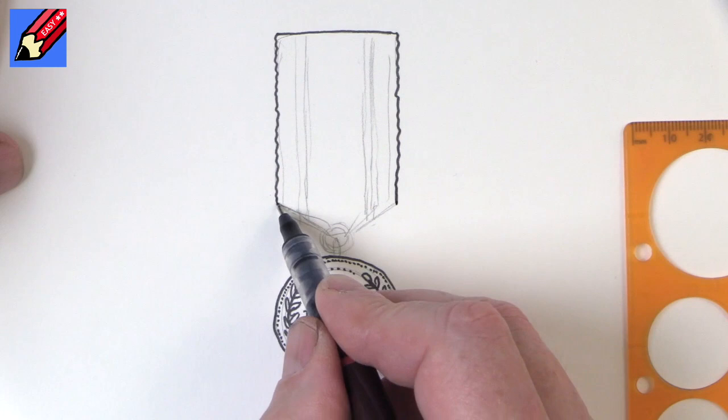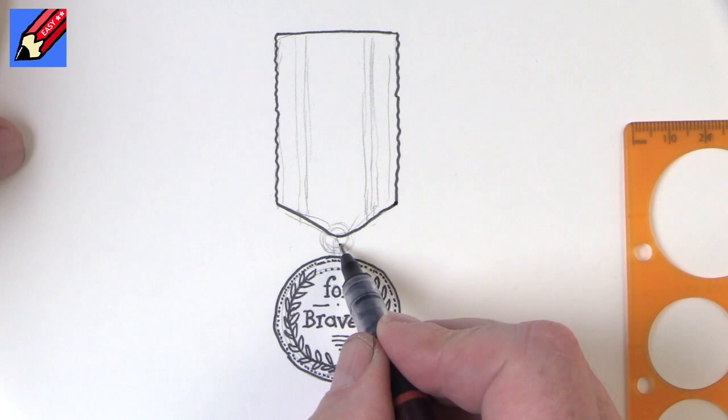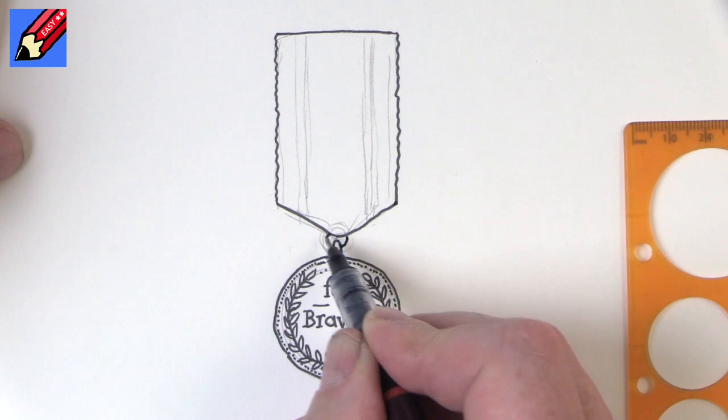First and then that's going to come down slightly curved at the bottom. Let's do this, the bit that holds it on, and then we can draw the ring going around and through it like that. Now here you're going to want to be quite careful.